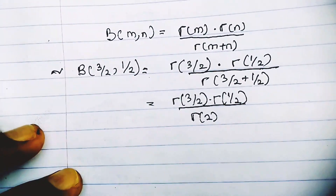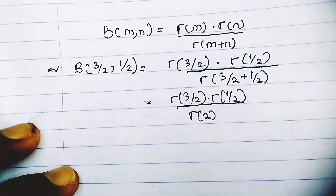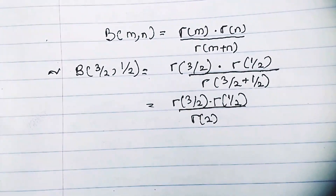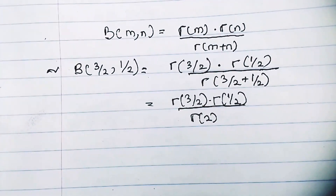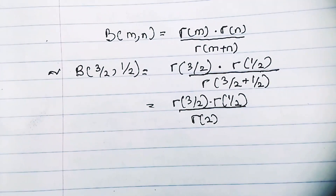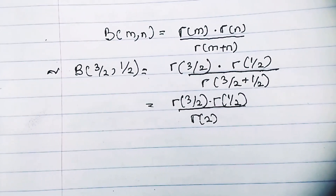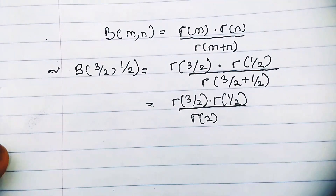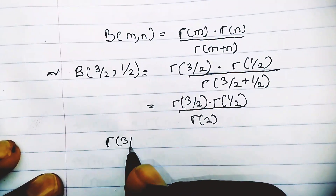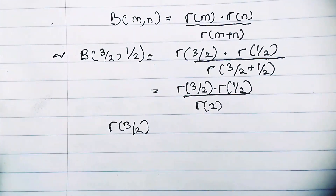Now what's left is to apply our knowledge of evaluating gamma functions. Since we have the beta expressed in terms of gamma functions, we now use our knowledge of the gamma function to solve this. Let's evaluate Γ(3/2) first — remember we've treated gamma functions before, so this shouldn't be a problem.